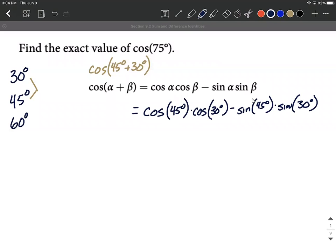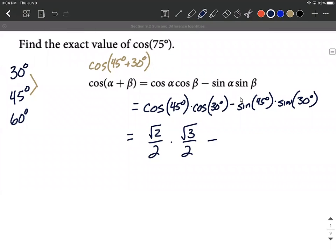We chose 30 degrees and 45 degrees because we can evaluate these. So the cosine of 45 degrees turns out being square root of 2 over 2, cosine of 30 degrees is square root of 3 over 2, bring along our subtraction in between, sine of 45 is square root of 2 over 2, and then sine of 30 degrees is one-half.